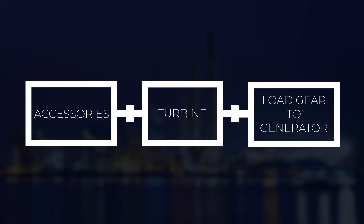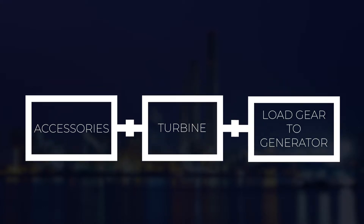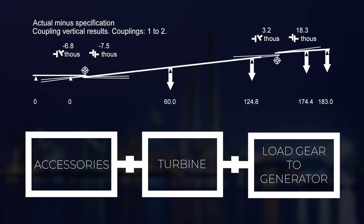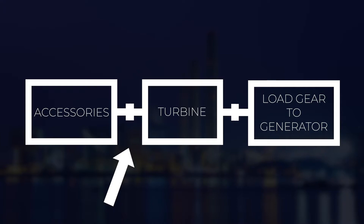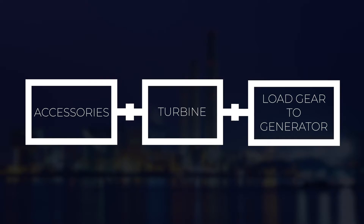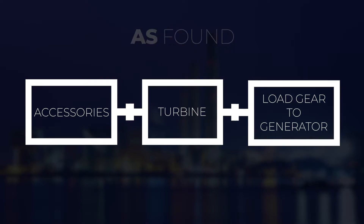Once we have these readings, we can examine the as-found conditions of the alignment. At this point, we must also factor in the alignment targets. We should have a coupling alignment target for the accessory to turbine coupling, and also a target for the turbine to the load gear coupling. We will consider these targets in our alignment.